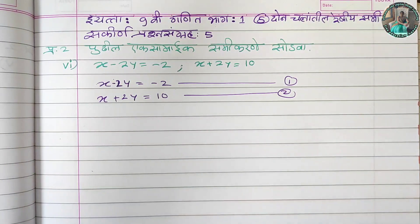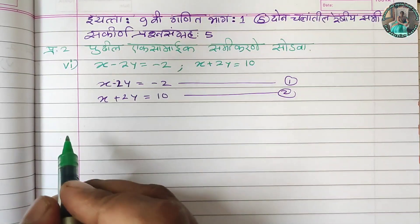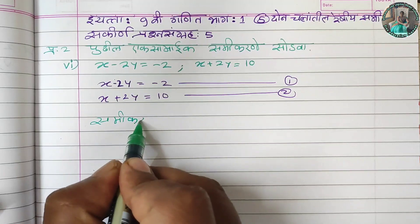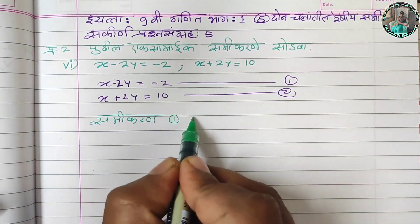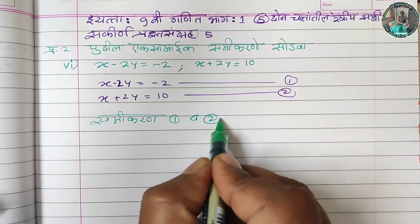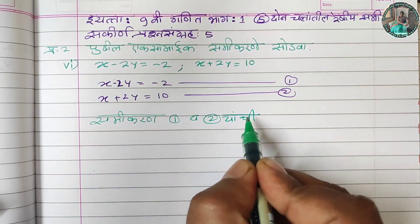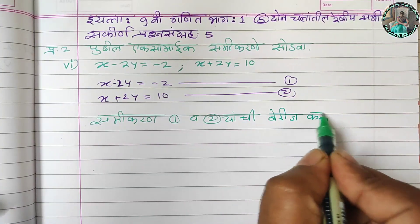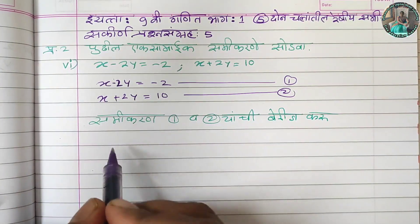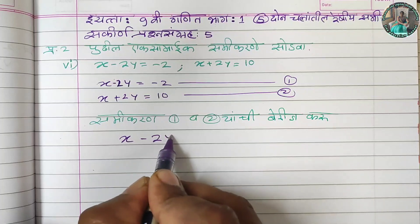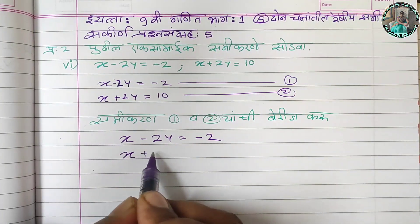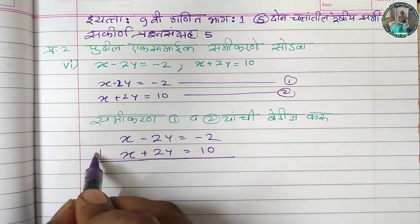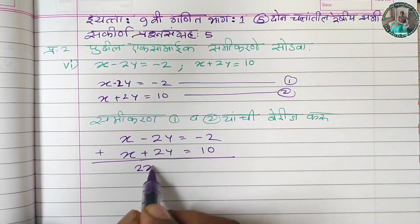We will add x to the y to the x. We will add 1 and 2x to the 2x, which is 2 and this is 2, it will be 0. x plus 2y equals 10. So, we have two y and two y cut and this is 2x.